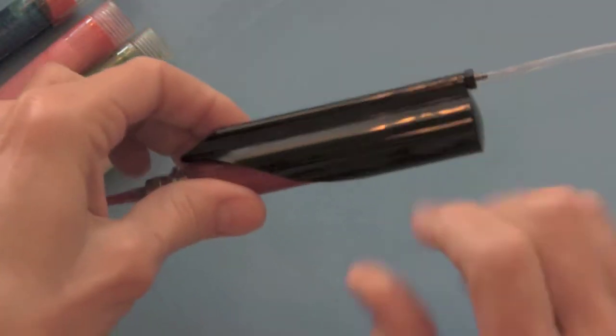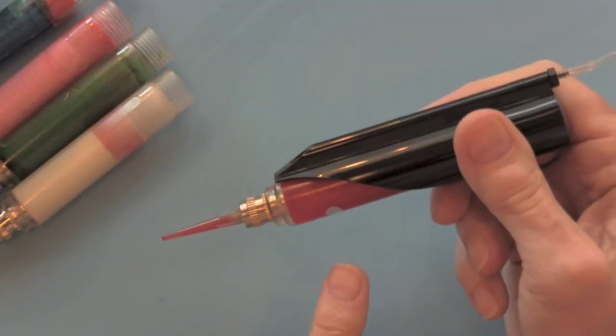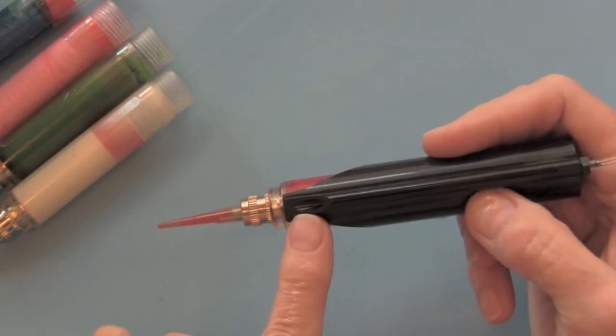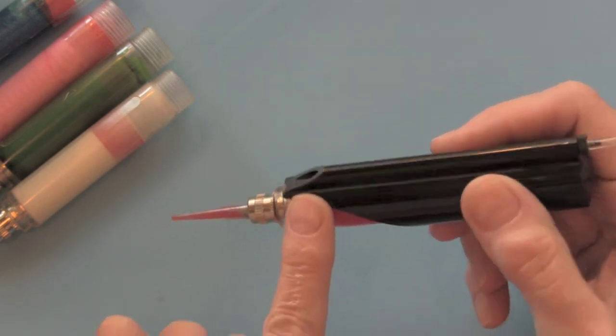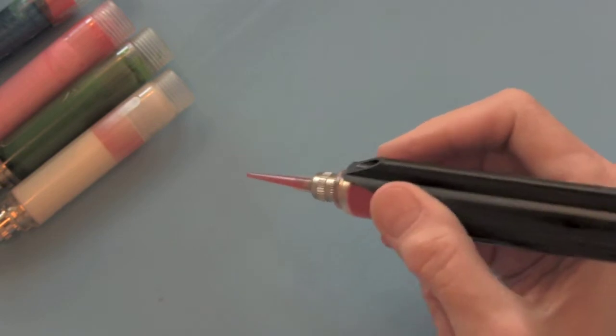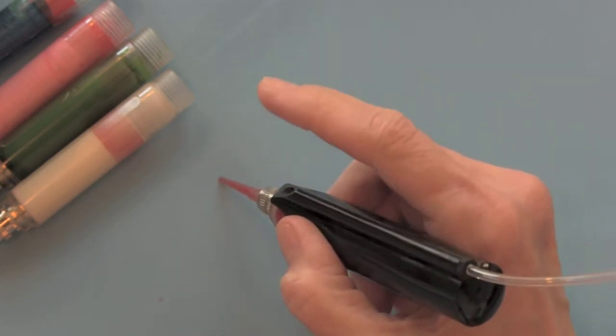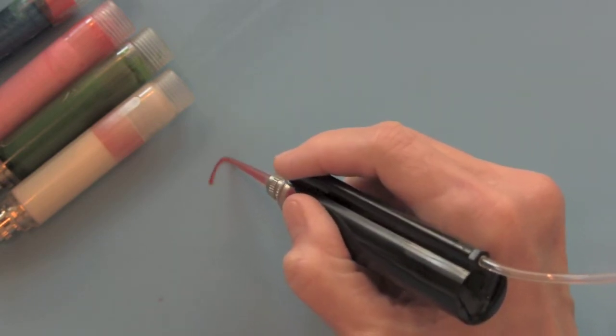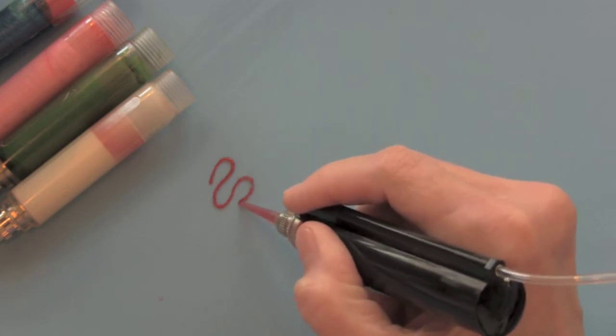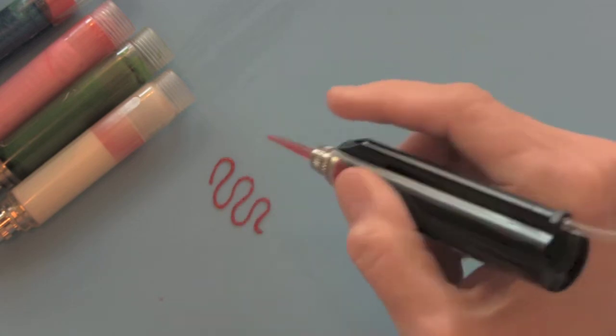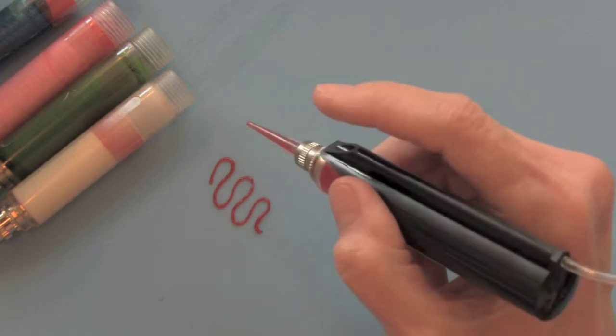The air pen looks like this. It comes with five cartridges, and the top of the air pen has a hole that, when you put the tip of the air pen down on the surface and cover that hole with your fingertip, it allows it to dispense whatever's in the pen. When you take your finger off the hole, it stops.